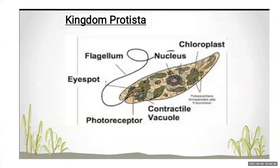Kingdom Protista comes under unicellular eukaryotes. In the picture, we can see the nucleus, membrane, chloroplast, contractile vacuole, and photoreceptor. The meaning of the word Protista is 'very first.' This kingdom Protista is very hard to classify because it has characters of others too — they can be autotrophs or heterotrophs. So it is called 'very first.'